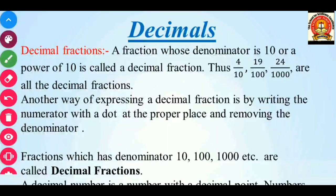So dear children, now moving to decimals — decimal fractions. A fraction whose denominator is 10 or a power of 10, like 10, 100, 1000, etc. Here we are having a decimal fraction example. Another way of expressing such a decimal fraction is just writing the numerator with a dot at a proper place and removing the denominator part. So such fractions where we are having denominators 10, 100, 1000 are called decimal fractions, and such fractions we can express in the form of a decimal, and vice versa.